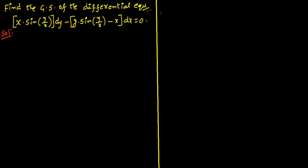Hi everyone, welcome back to our channel. In this video I will give you a GATE style question. This question appeared in the GATE examination. Find the general solution of the differential equation: x times sine(y/x) dy minus y times sine(y/x) minus x, all times dx, equals zero.